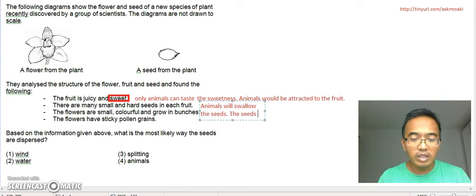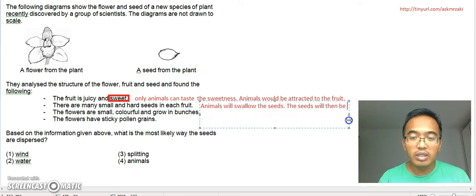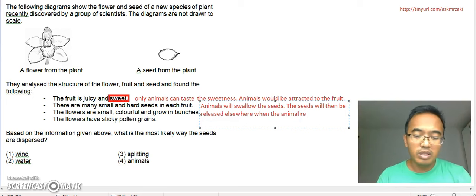The seeds will then be released elsewhere when the animal releases its waste from the digestive system, also known as undigested food.